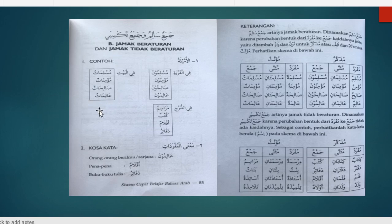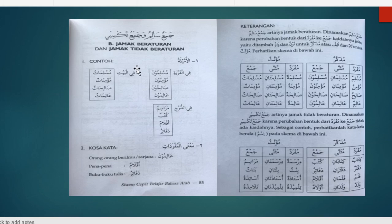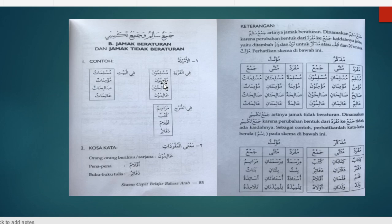Kita lihat perubahan katanya yaitu penambahan Alif dan Ta, ataupun Atun. Ini merupakan Jama' yang beraturan yaitu Jama' Mudzakkar Salim dan Jama' Mu'annas Salim. Kita masuk ke Jama' yang tidak beraturan yaitu Jama' Taksir.